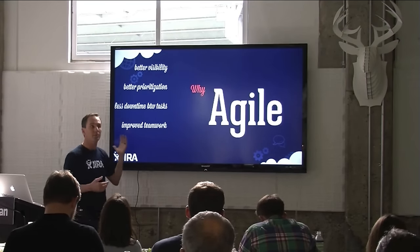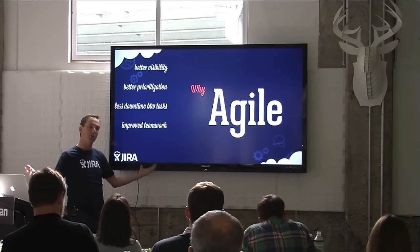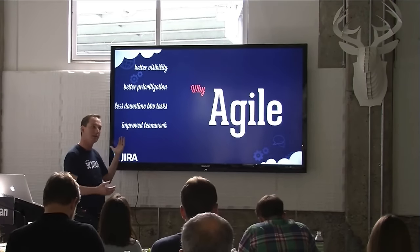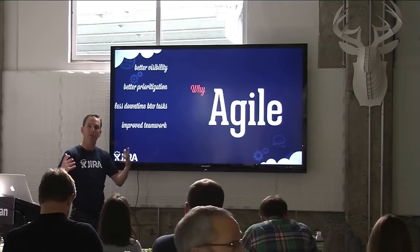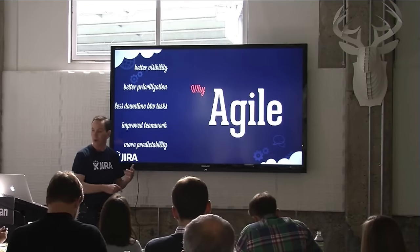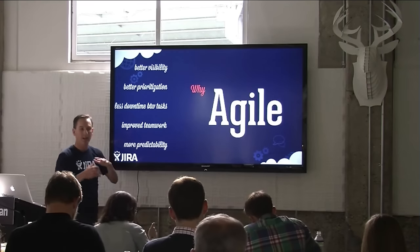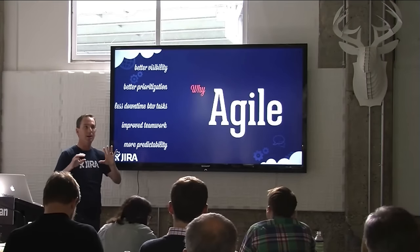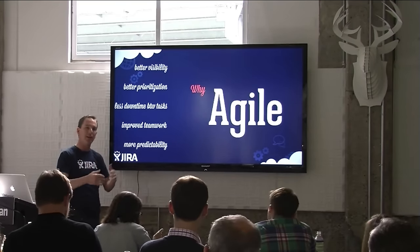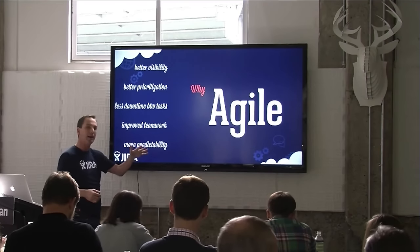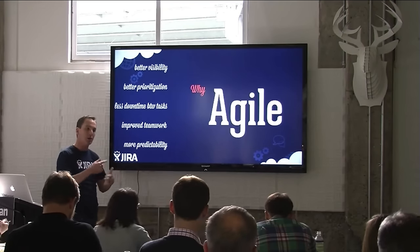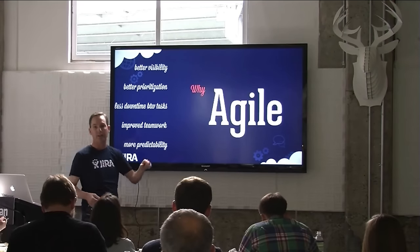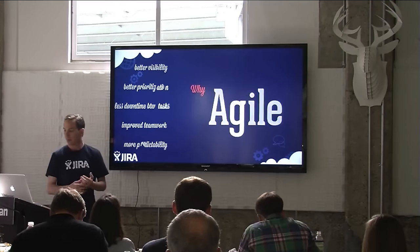Improved teamwork is another big side effect. When you put all of your team's work in one system and self-assign by grabbing work from the top of the list, you get much better collaboration between people who share the same goal. And finally, more predictability. If you start actually estimating your tasks — even if you're not a developer — and ask yourself, can I really do these eight things by next Friday? Over time, as you try that over and over again, you get a really good understanding of what you'll realistically accomplish by next week.